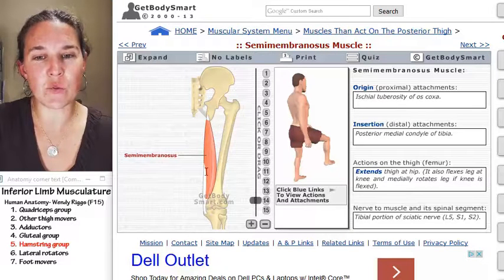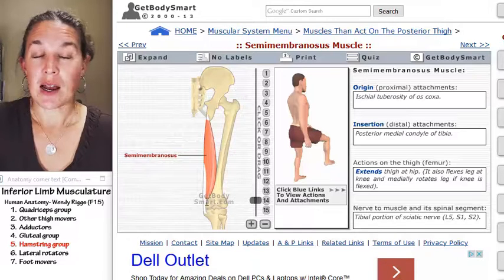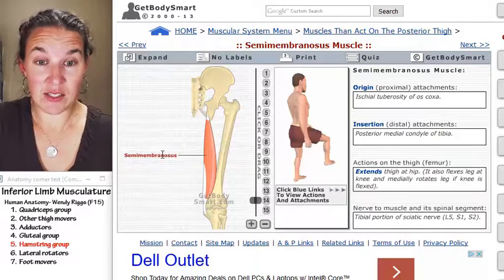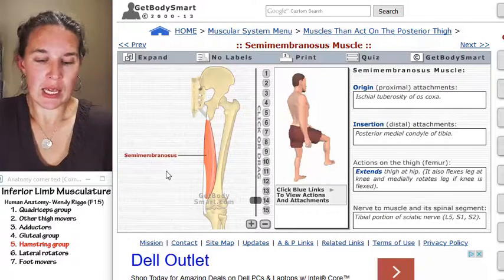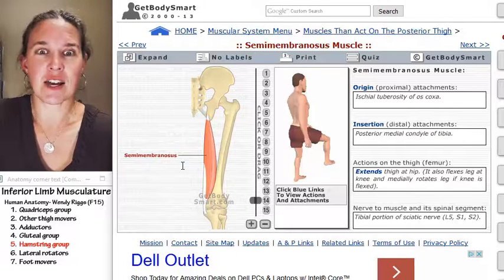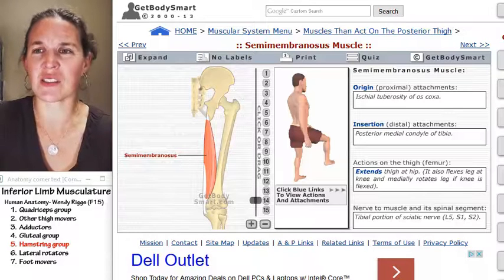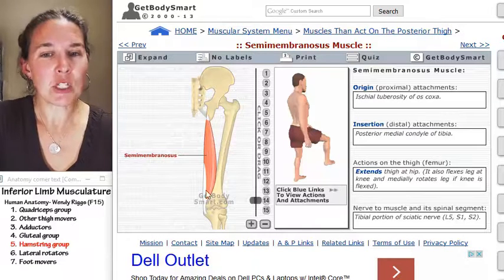Now, semimembranosus has this weird, I'm sorry, it looks like a membrane-y tendon to me. And so if I'm looking in a posterior thigh of a human, I can find semimembranosus quite easily because it has this really unique look.